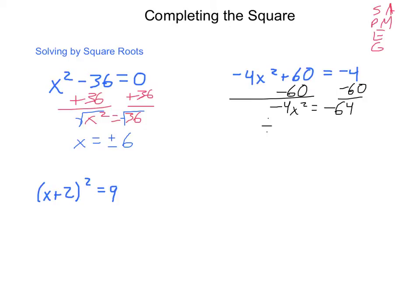Division and multiplication: I divide by negative 4 and I come out with x squared equals 16. Do I have any exponents? I do. I'm going to take the square root of each side and I will be left with x equaling positive or negative 4. You can plug those back in to see that they work.